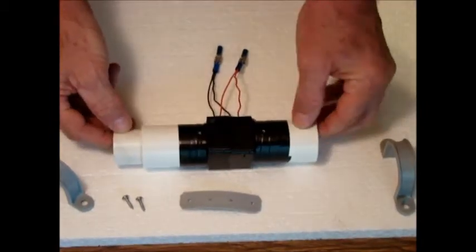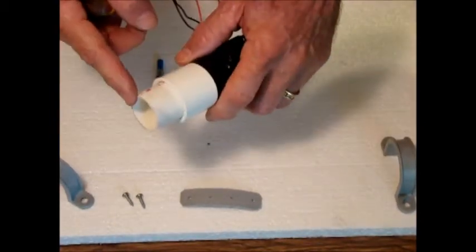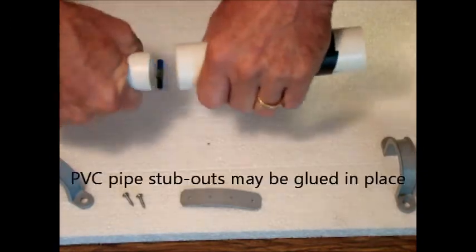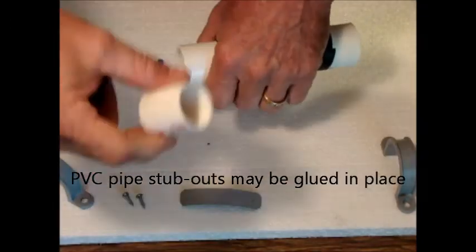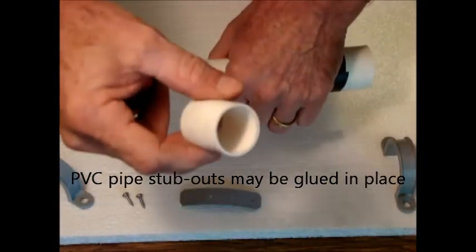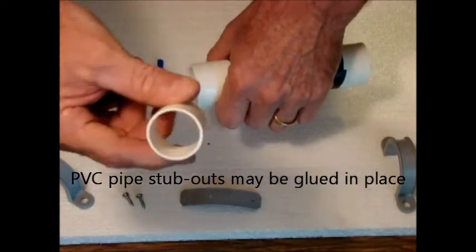Now, you have the basic assembly. I have a short stub out here for the pipe to fit on, which is a piece of 1-inch PVC pipe, thin wall pipe.